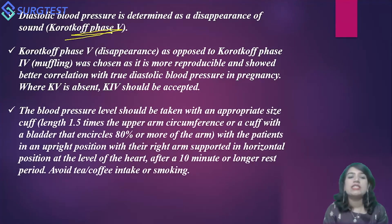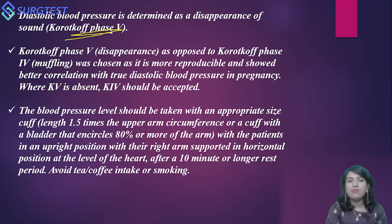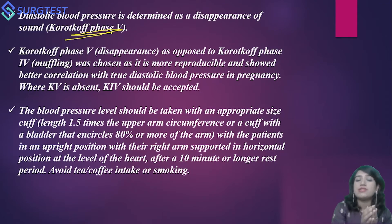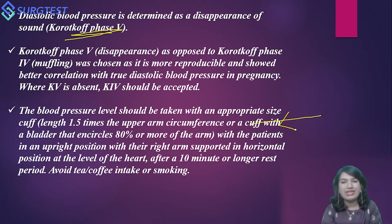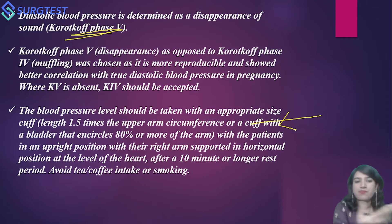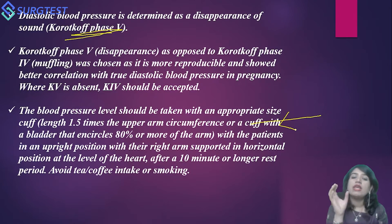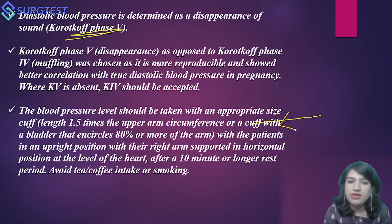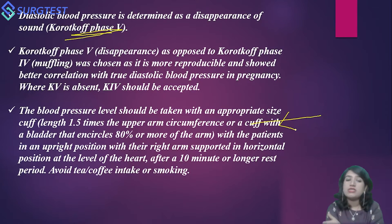Blood pressure should be taken with an appropriately sized cuff. The length should be 1.5 times the circumference of the upper arm, or a cuff with a bladder that encircles 80% or more of the arm. Undersized or oversized cuffs are not advocated; cuffs of different sizes should be available for lean or obese patients. The patient can be in an upright sitting position, supine, 45-degree reclined, or left lateral position. The arm should be supported in a horizontal position maintained at the level of the heart.